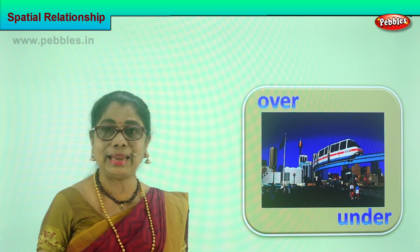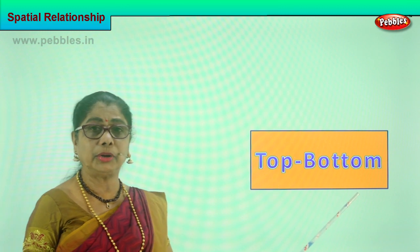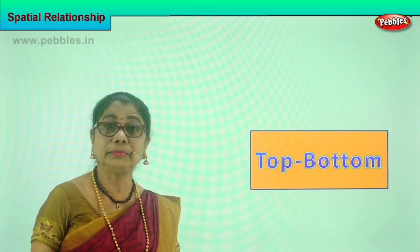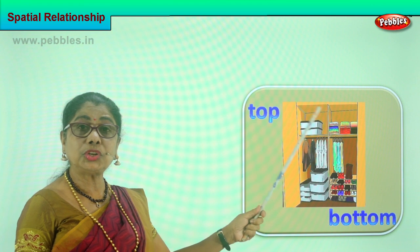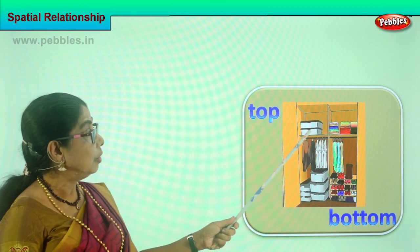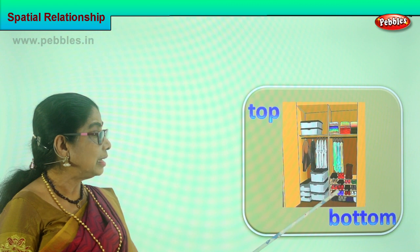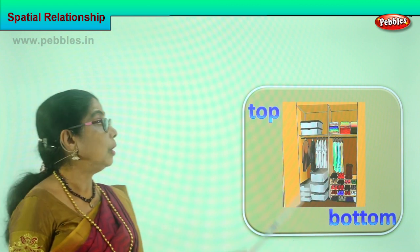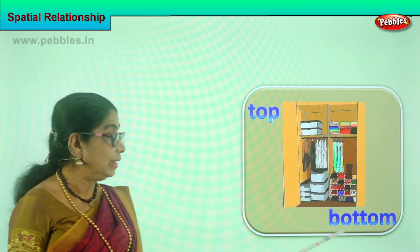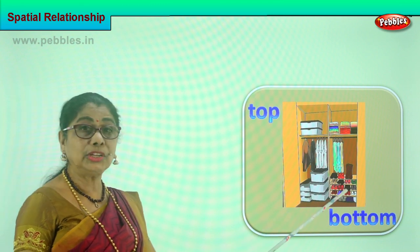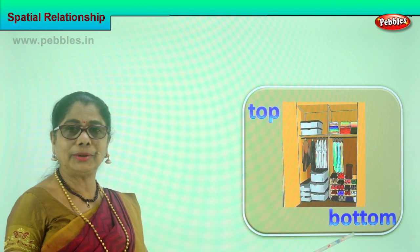Let's look at the spatial relationship between the top and the bottom — top and bottom. Look at the picture and let's learn. What is on the top of the cupboard? You find all the boxes lined up. At the bottom, you have the shoe rack — clippers are all placed here. On the top, you store away things you don't need to use daily. At the bottom, you find boxes and shoe rack that you use daily. Top, bottom — what's on the top? What's at the bottom? Good.